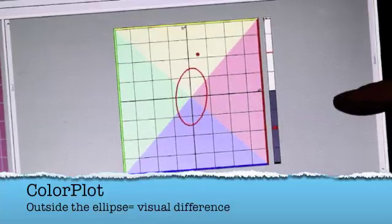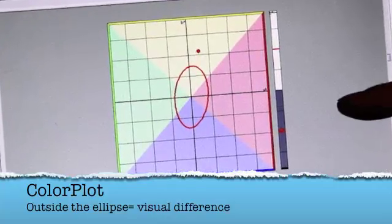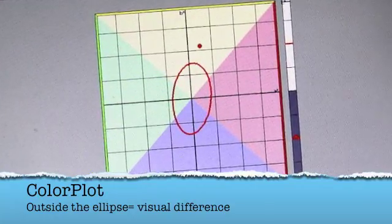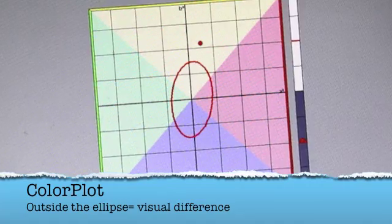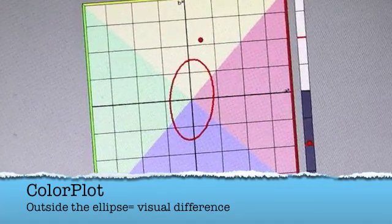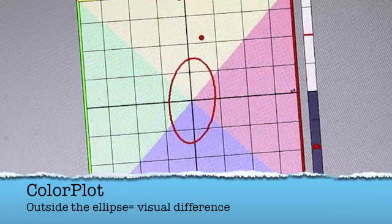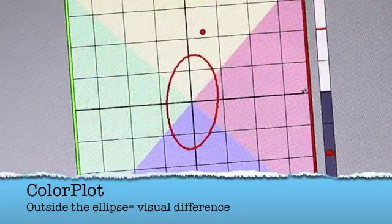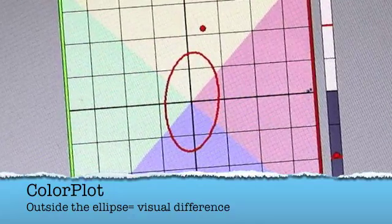And here on our color plot, the Bertolli sauce is defined as our standard with its bullseye. Any value right outside the bullseye, in this case, the Classico sauce, identifies as being visually different. And here it's showing that it's much more yellow.